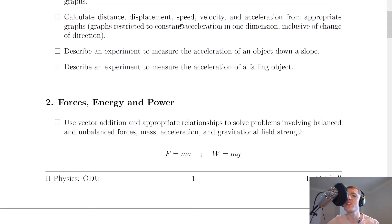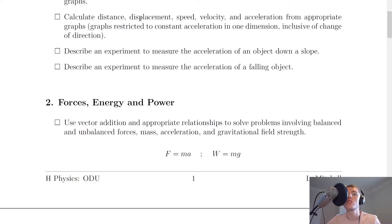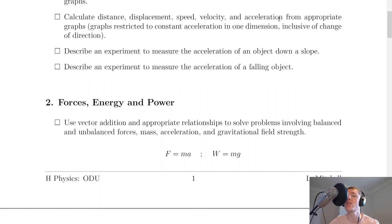Next, you need to calculate distance, displacement, speed, velocity and acceleration from appropriate graphs, restricted to constant acceleration in one dimension, inclusive of change of direction. Remember: distance comes from the area under a speed-time graph; displacement from the area under a velocity-time graph; speed from the gradient of a distance-time graph; velocity from the gradient of a displacement-time graph; and acceleration from the gradient of a velocity-time graph.